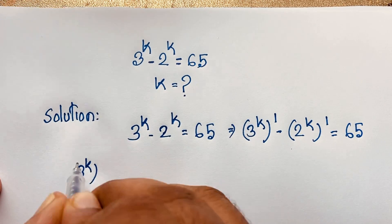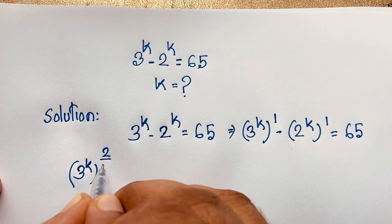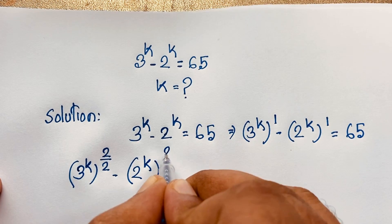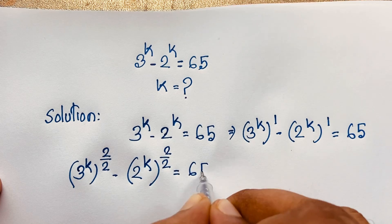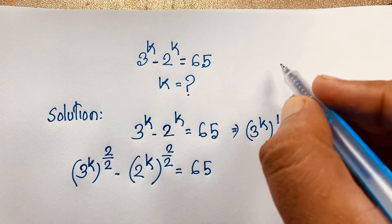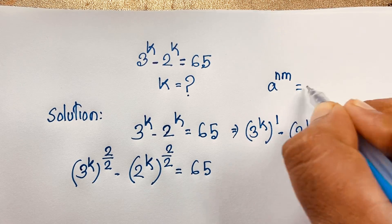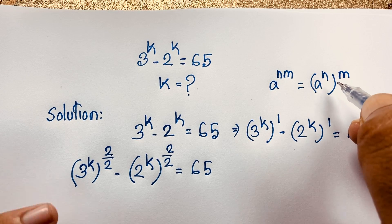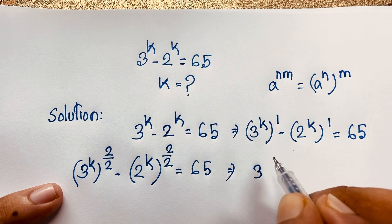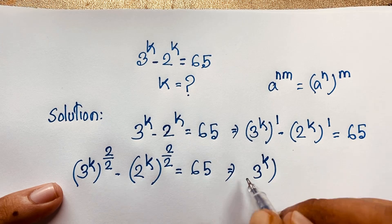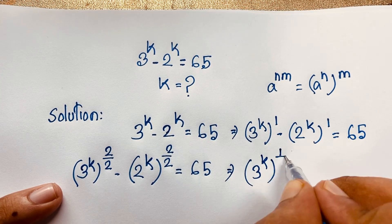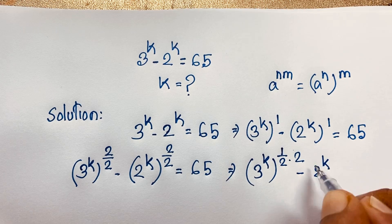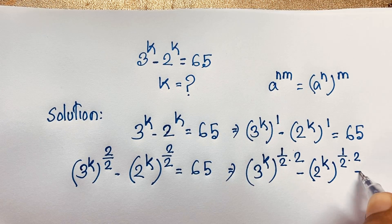Now, for 3 to the power k, I rewrite the exponent as 2 over 2, giving power k times (2/2) = 1. Similarly for 2 to the power k. Using the formula a to the power (n·m) = (a to the power n) bracket power m, I rewrite: 3 to the power k becomes 3 to the power (k times 1/2 times 2), and similarly for the 2 to the power k term.